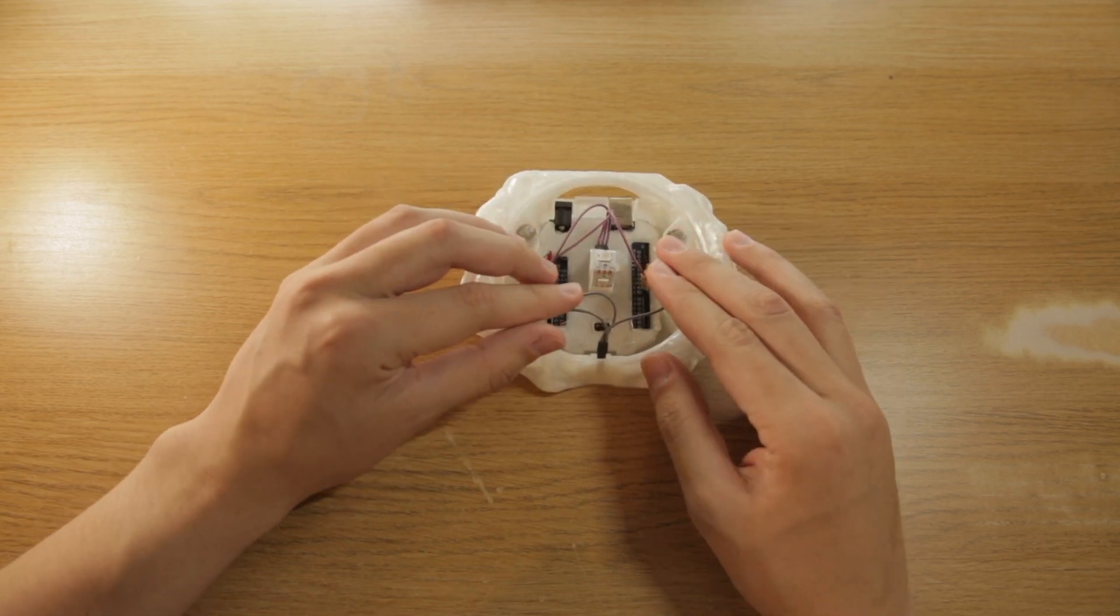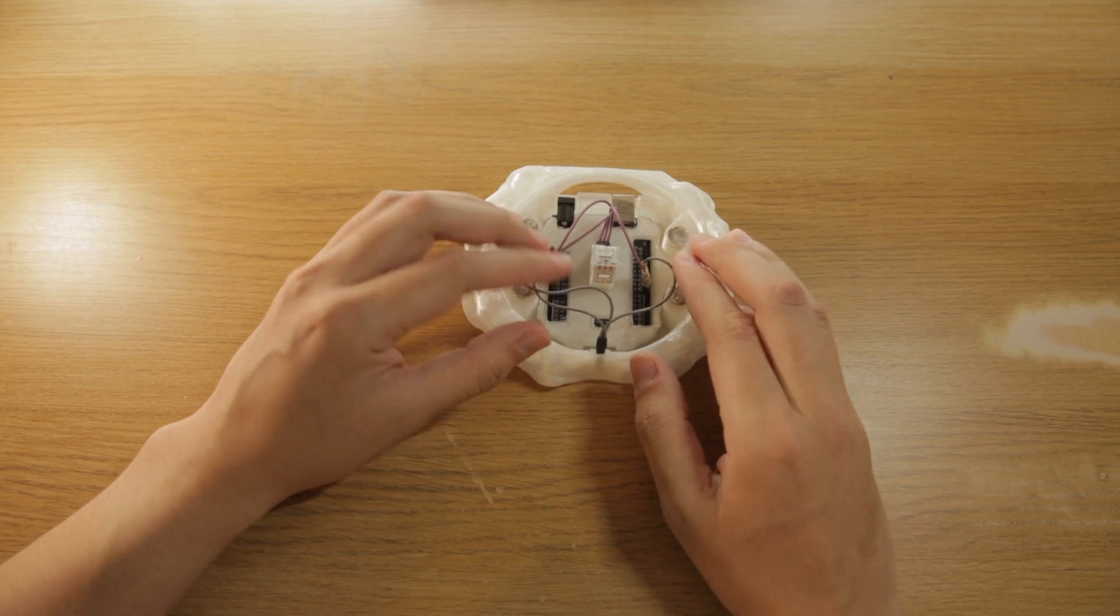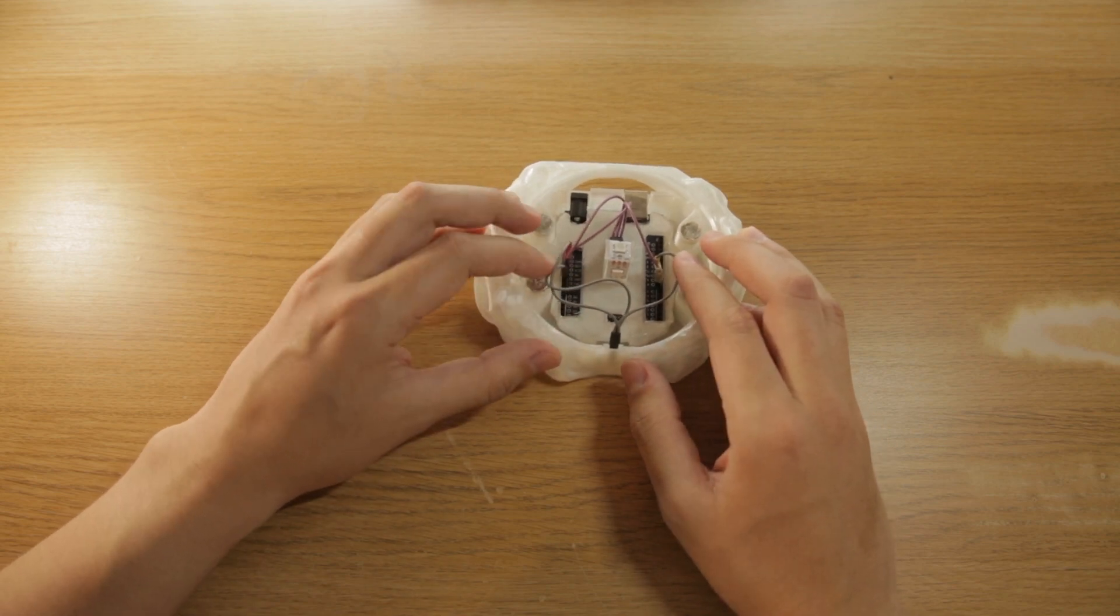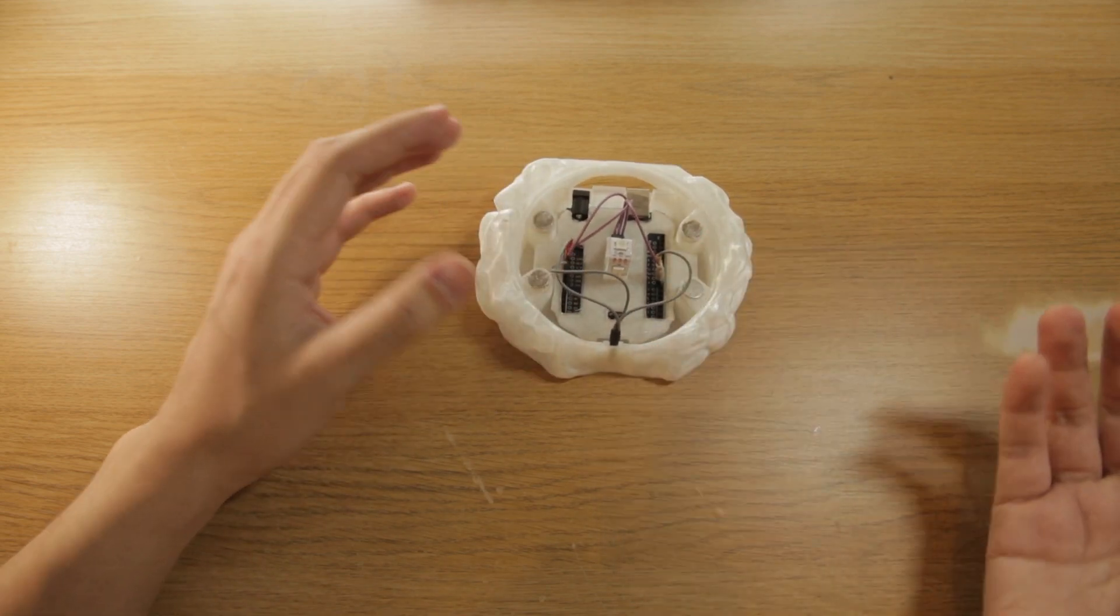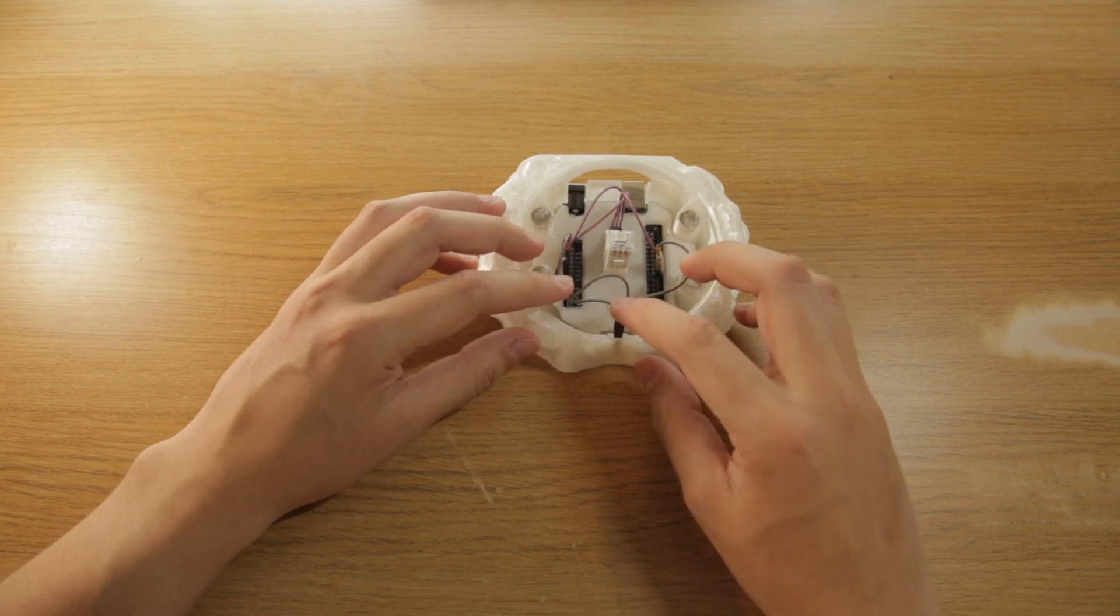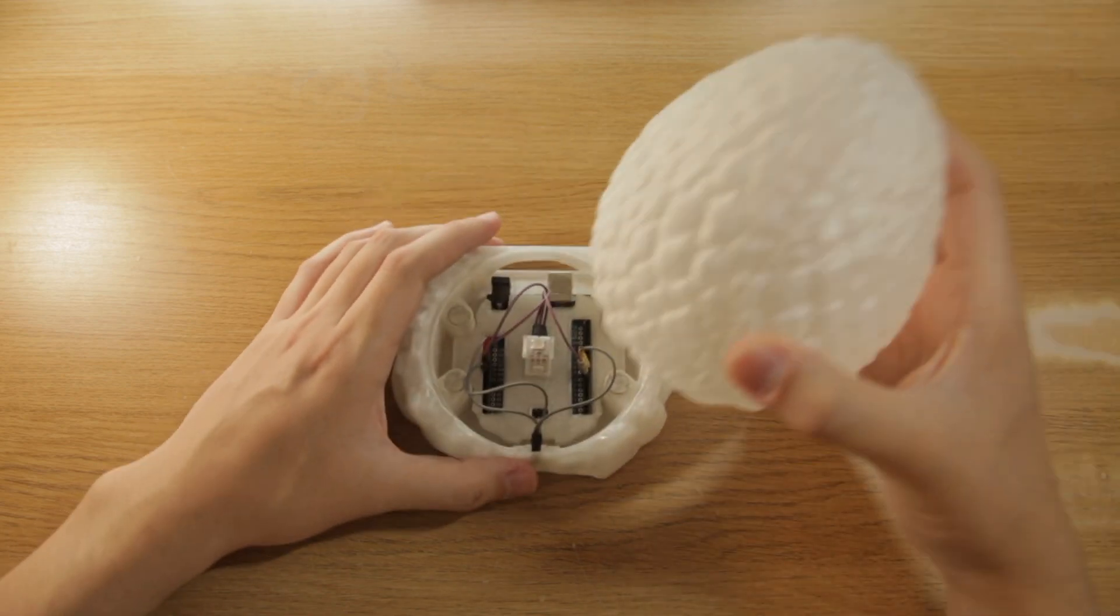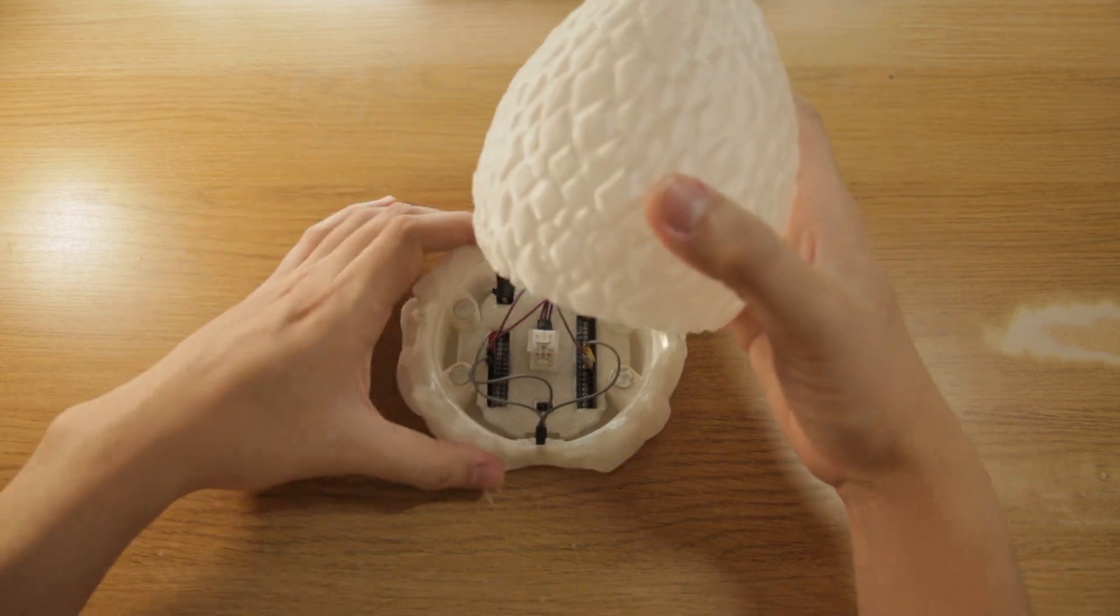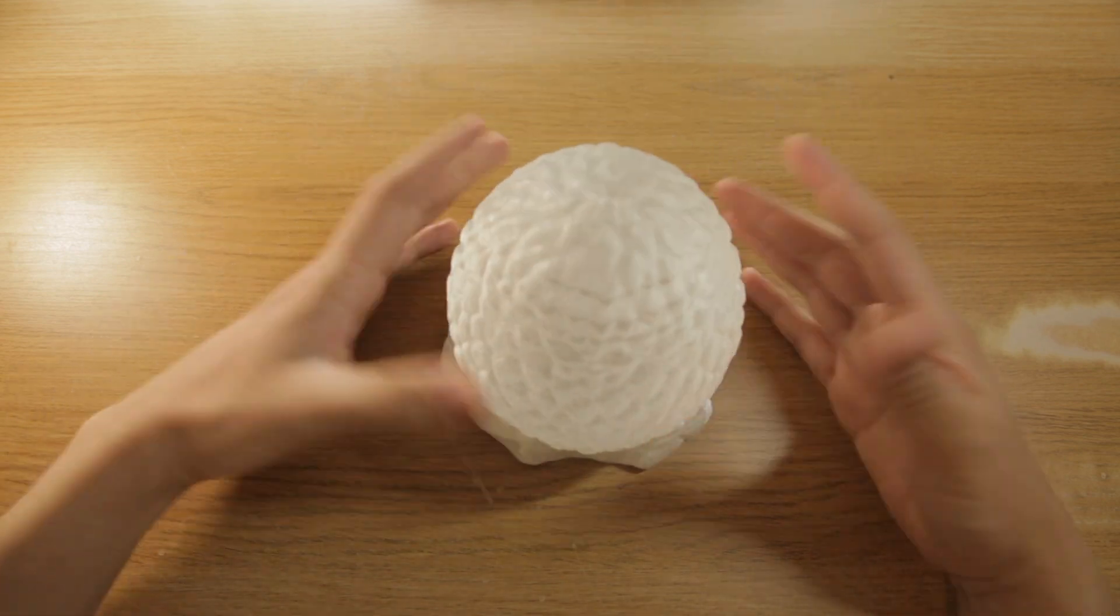You can take some time to do some cable management here, maybe clean them up a little bit, make sure they're not in the way of the magnets. But once you're done with that, you can go ahead, take your egg and just snap it right on just like that.